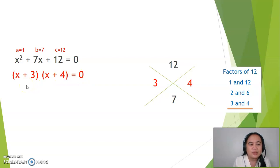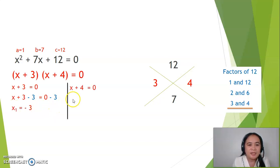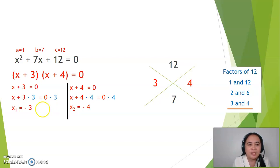Now, solving for the roots: x plus 3 equals 0 — subtract 3 from both sides, so the first value for x will be 0 minus 3, or negative 3. For the other side, x plus 4 equals 0 — subtract 4 from both sides, so the second value for x will be negative 4. Therefore, the roots for x squared plus 7x plus 12 equals 0 are negative 3 and negative 4.